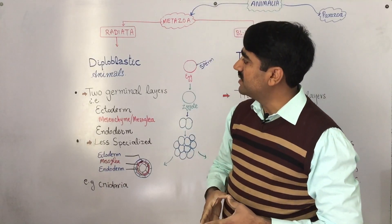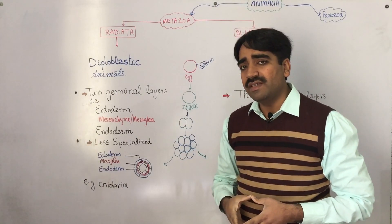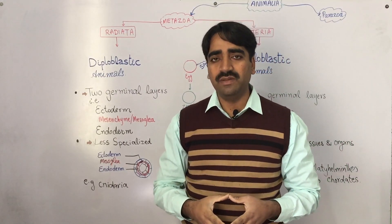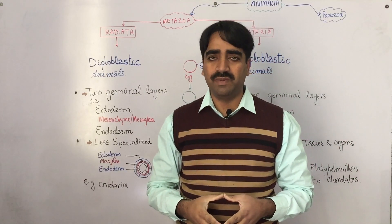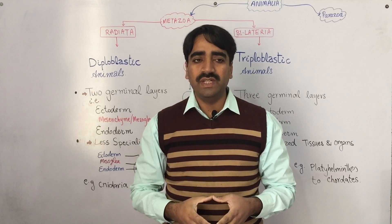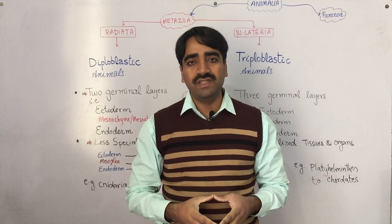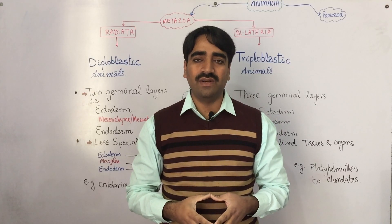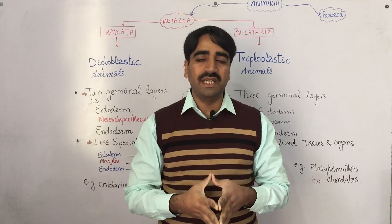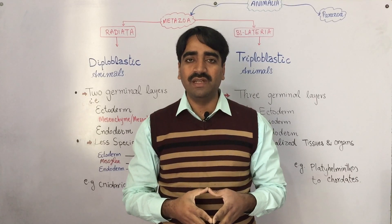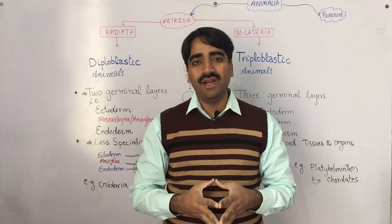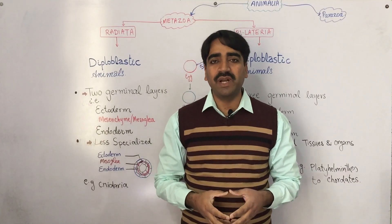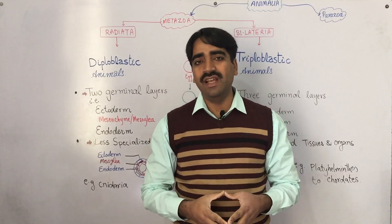Animals may also be categorized into two further groups: diploblastic and triploblastic. The basis of this grouping is the number of germinal layers. A germinal layer is a primary layer of cells.